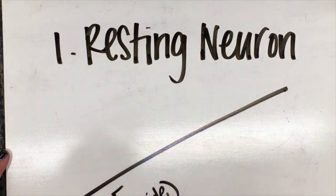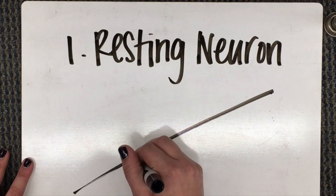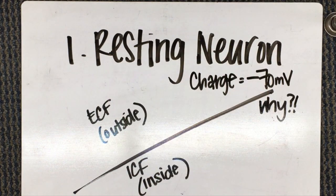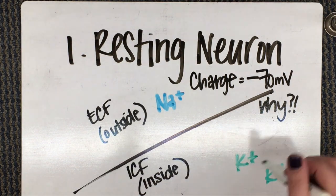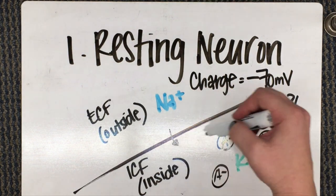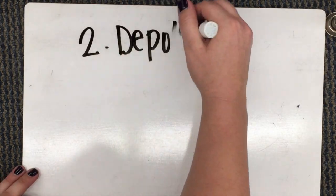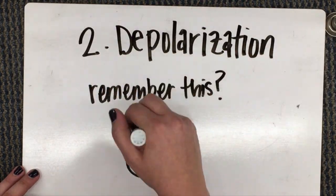A resting neuron has an overall charge inside the cell of negative 70 millivolts. Think about why. We have some negatively charged A- proteins contributing to that. We also have different permeabilities to sodium and potassium into and out of the cell. Remember that the cell is 75 times more permeable to potassium.